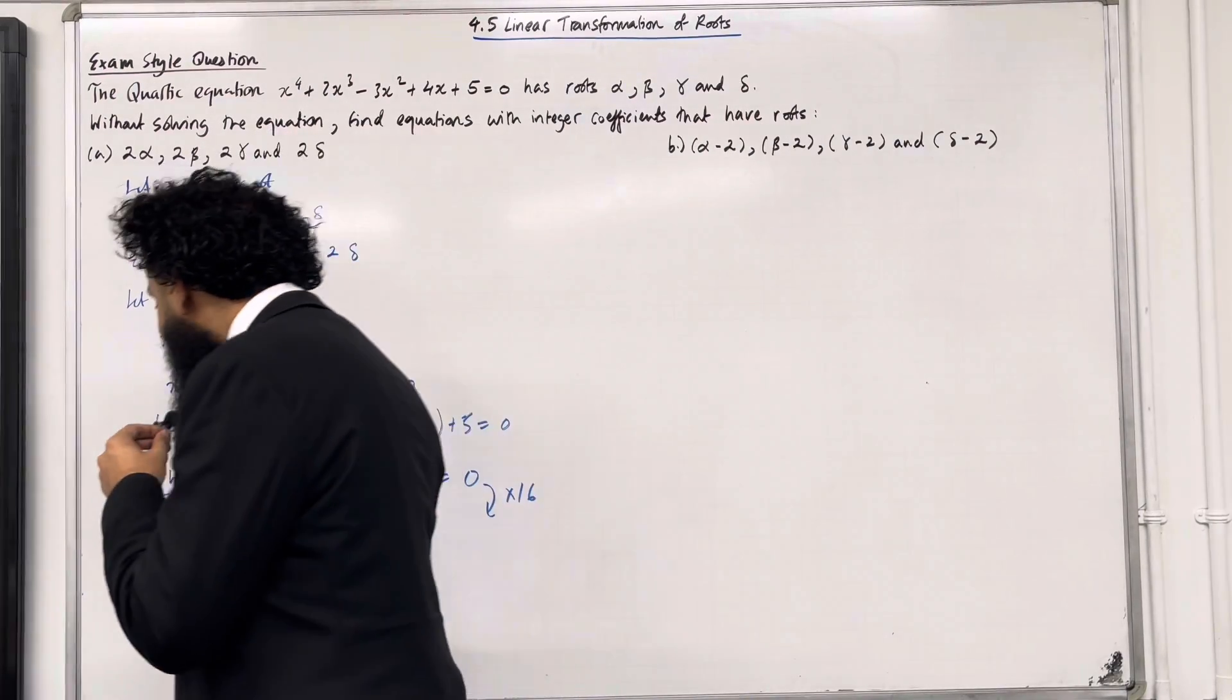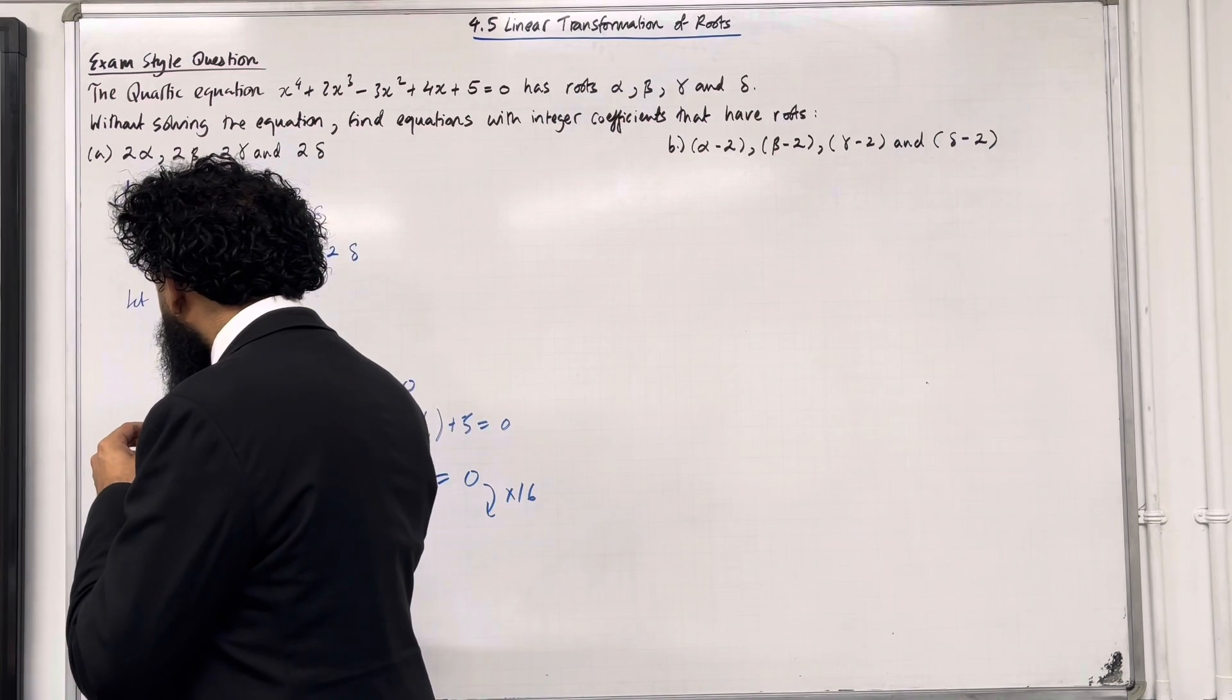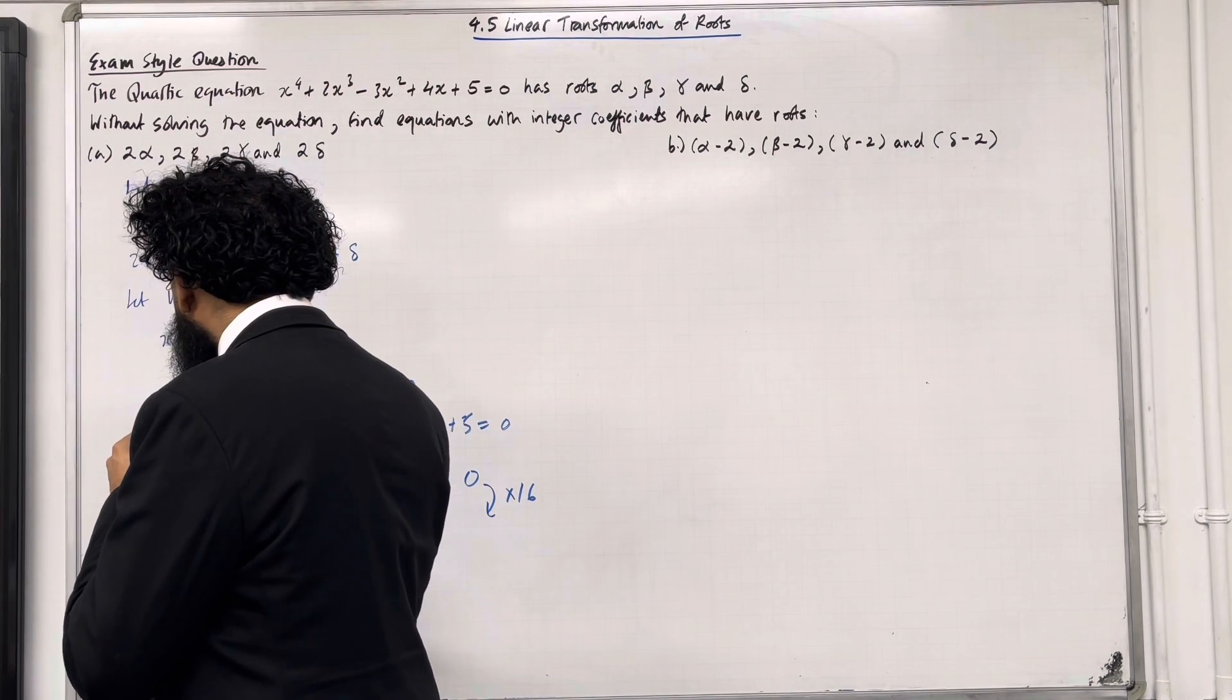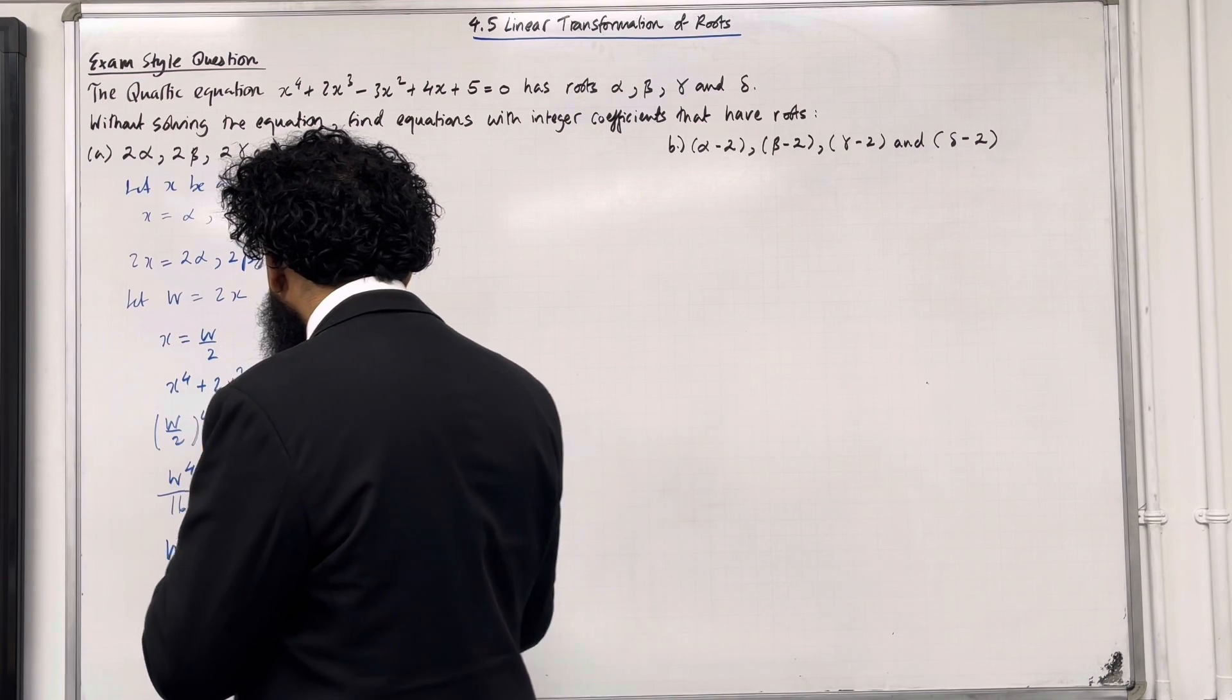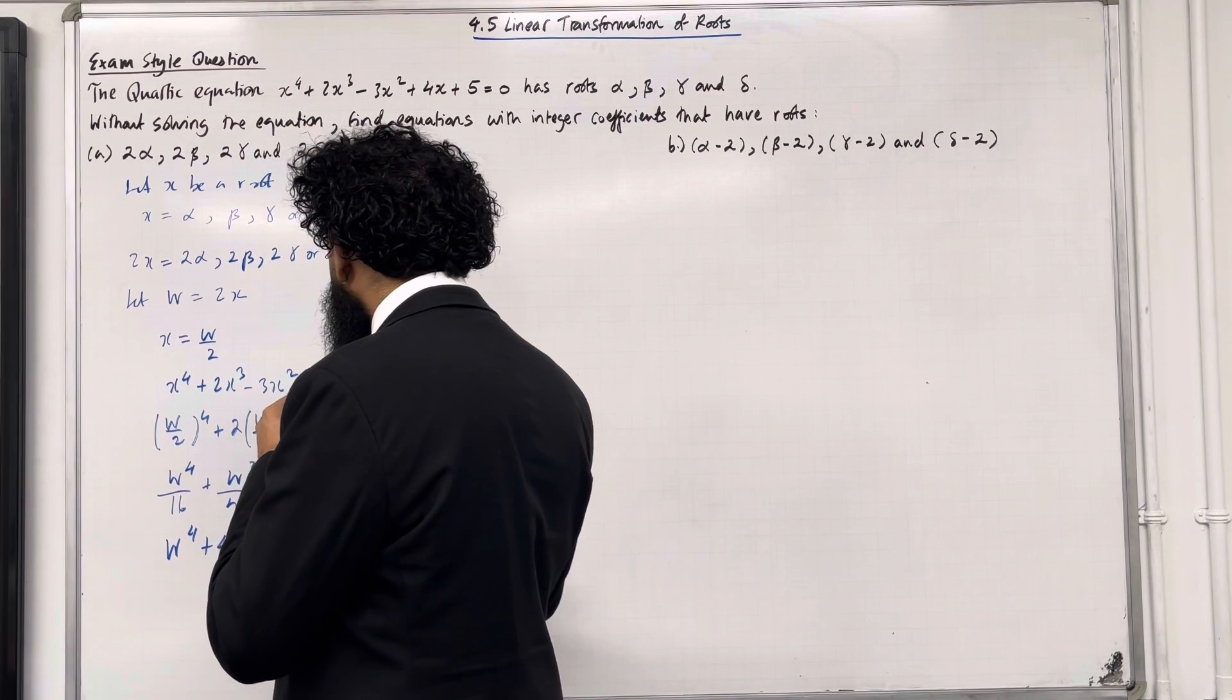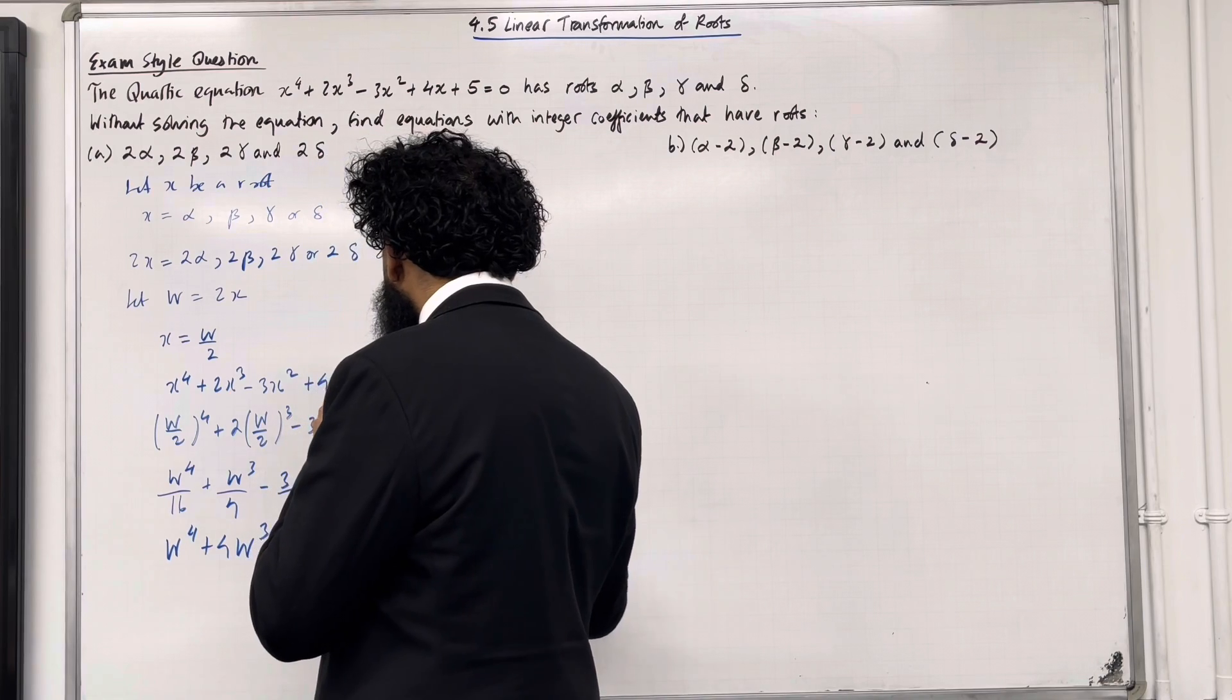So my new polynomial with integer coefficients will be w⁴ + 4w³ - 12w² + 32w + 80 = 0.